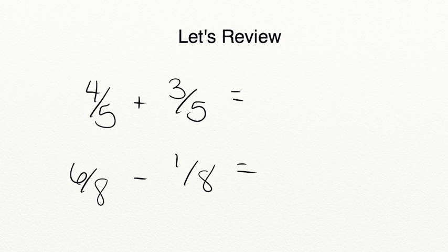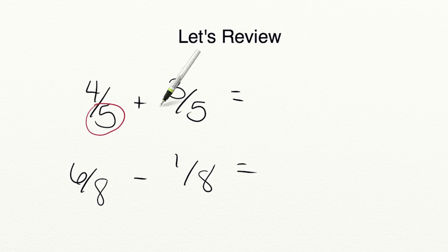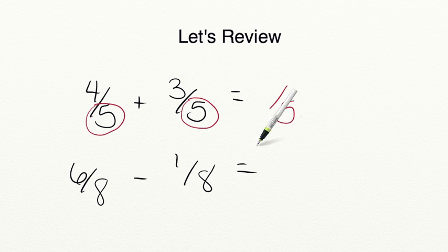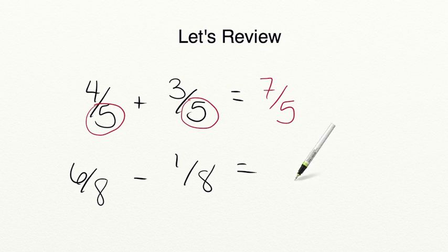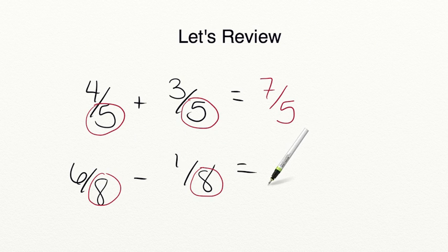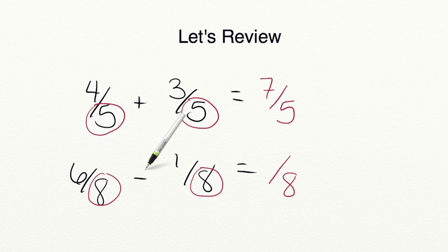Let's review what you've learned in today's lesson. When adding fractions, first check the denominators to make sure they are the same. If they are, write your answer with that same denominator, then add your numerators: four plus three equals seven, so four-fifths plus three-fifths equals seven-fifths. When subtracting fractions, check that your denominators are the same, bring that denominator over, and subtract your numerators: six minus one equals five, so six-eighths minus one-eighth equals five-eighths.